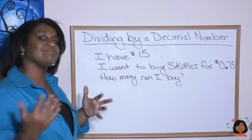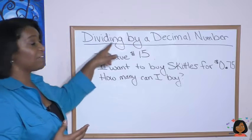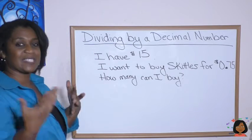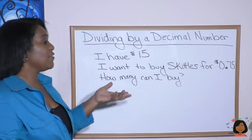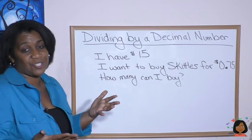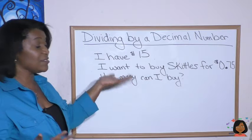Here's a problem, a real life problem, where we'll be dividing by a decimal number. So, let's say I have $15 and I want to buy some Skittles. They cost 75 cents each. How many Skittles can I buy?